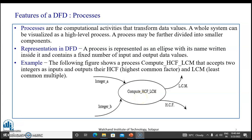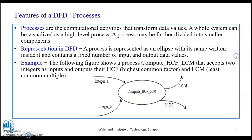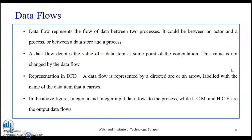Continuing to the next feature — data flows. The data flow represents the flow of data between two processes; it could be between an actor and a process, or between a data store and a process. Data flow denotes the value of a data item at some point of computation, and this value is not changed by the data flow. Data flow is represented graphically by a directed arc or an arrow labeled with the name of the data item it carries.